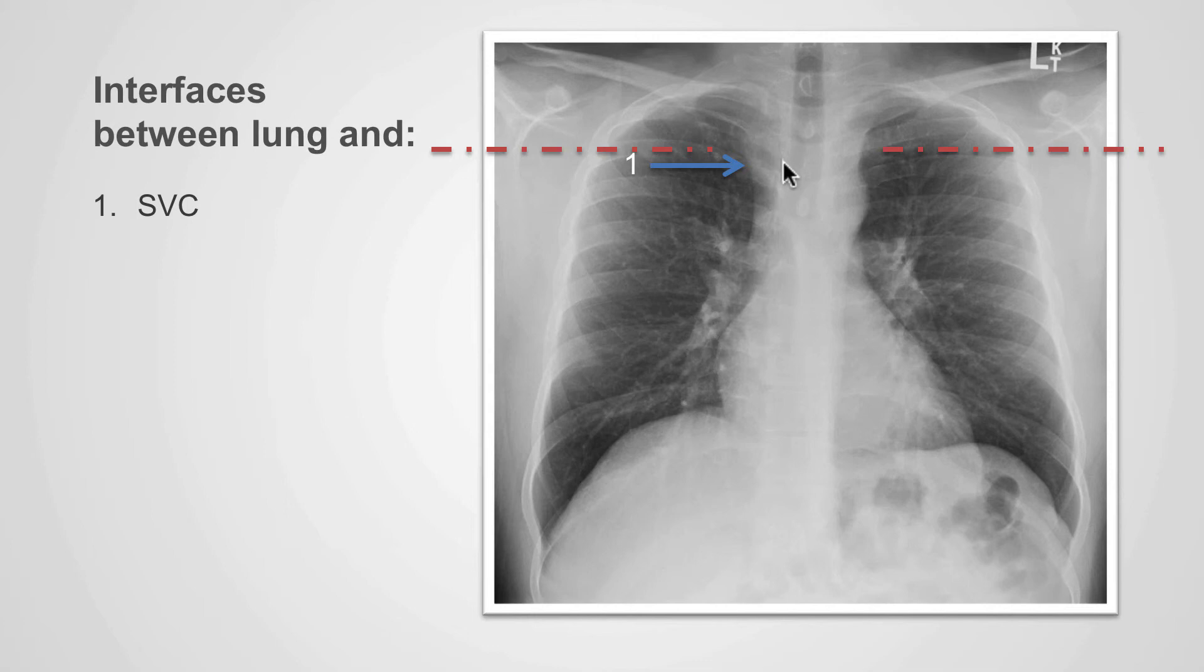We can see another interface at this level. Can you identify what that is caused by? That is caused by the tissues in the right paratracheal region. We can identify this rectangular structure in this region, which we've already learned is caused by the trachea.